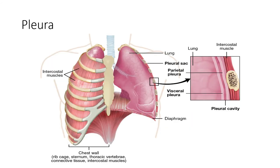If we have blood in the pleural space, that could be a hemothorax. If fluid accumulates — which we often see from infiltrates in the lung during disease — we call that a pleural effusion. Looking at our diagram, we have the visceral pleura lining the outer surface of the lung, then the parietal pleura, and between them the small pleural space filled with pleural fluid — only about 10 milliliters per lung. This negative pressure environment keeps the lungs inflated, and changing the volume in that pleural space with ventilation allows us to move air in and out.